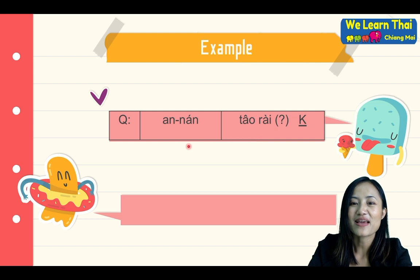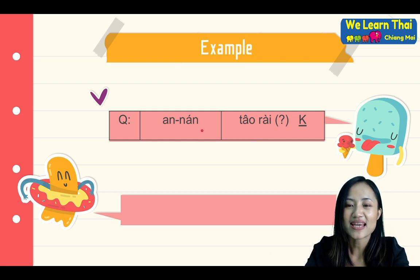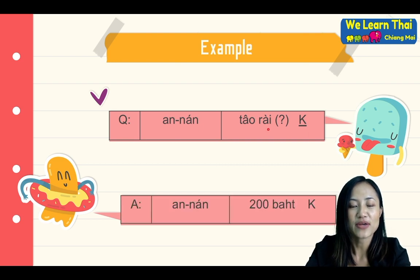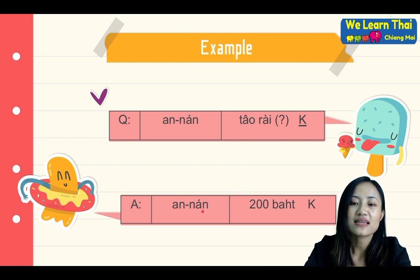Let's try again. Make sure you pronounce after me: อันนั้นเท่าไรค่ะ? When you answer, you will say: อันนั้นยีสิบบาดครับ.